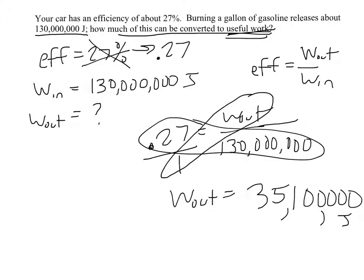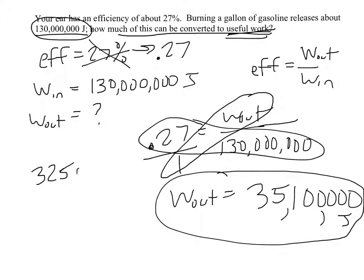When we do that, we will get this number here, which is 35,100,000 joules. And again, you always want to make sure this makes sense. We get an efficiency of 27%, which is about a quarter, so we should be getting about a quarter of this back. In your calculator, if you wanted, you could just do 130 million divided by 4 and see if that is a ballpark answer. When I do that, I get 32,500,000, so that's pretty close. Anytime you have a percentage that's an awkward number, it usually helps to estimate what you think the answer will be.